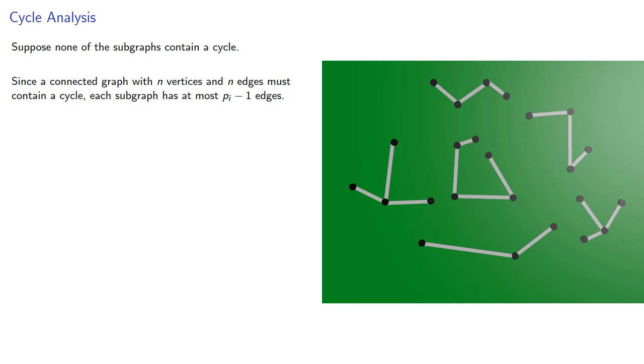Since a connected graph with n vertices and n edges must contain a cycle, each subgraph has at most pi minus 1 edges, one fewer edge than vertices. And so altogether they will use this many edges.